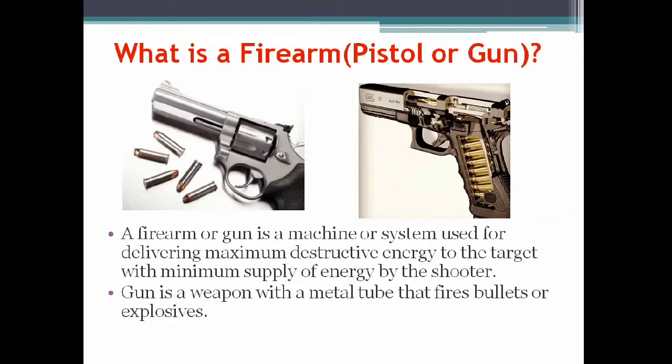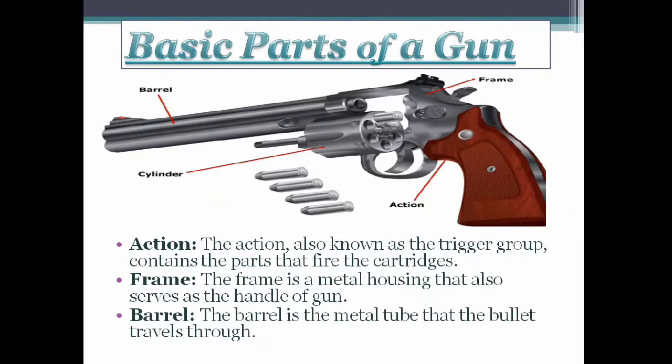A gun is a weapon with a metal tube that fires bullets or explosives. Now, what are the basic parts of a gun? The first part is the action, also known as the trigger group, which contains the parts that fire the cartridges. The second part is the frame — a metal housing complex that also serves as the handle of the gun.